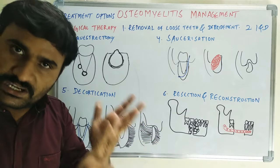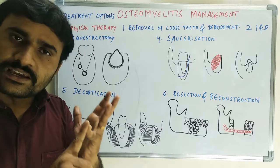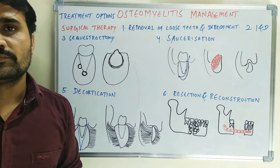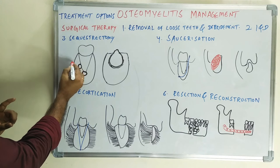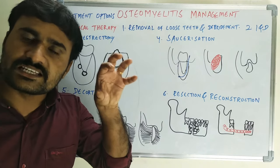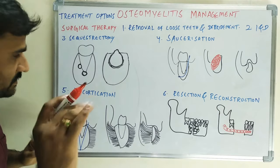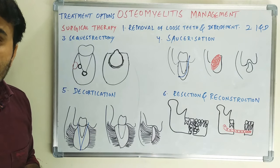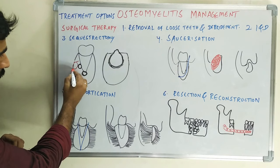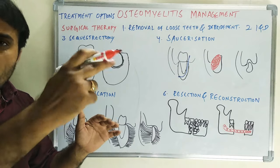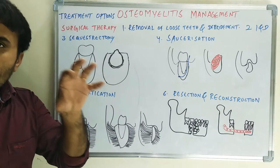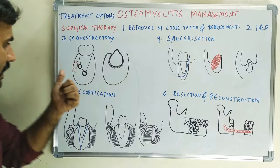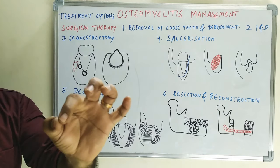Sequestrectomy is the removal of the sequestrum, done when the sequestrum is well localized within the central region of the bone — not involving the cortical plates. If the sequestrum is located in the cortical plates, after removing it there will be bony spicules in the margins. These spicules must also be removed, meaning some part of the lateral cortex is removed along with the sequestrum. That procedure is called saucerization.